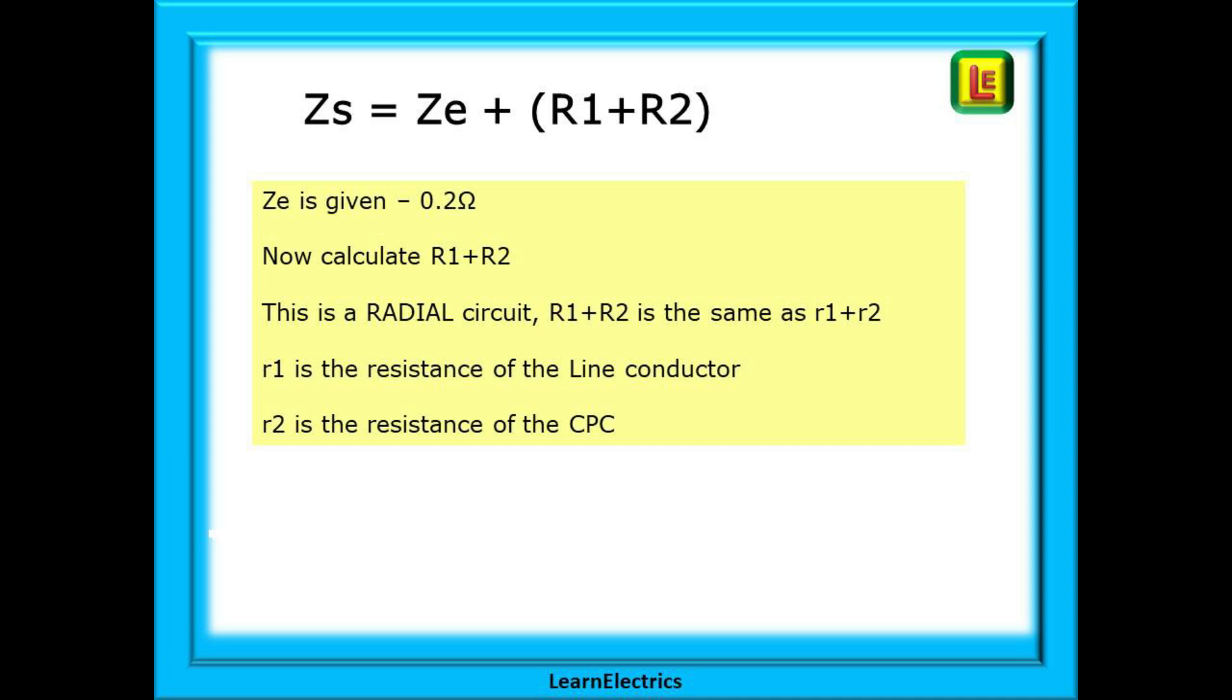This equation at the top should be familiar to you. It is one of those equations that must be known. And ZE is given to us as 0.2 ohms. This is a radial circuit so R1 plus R2 is the same as little r1 and little r2, the resistance of the line and CPC conductors.